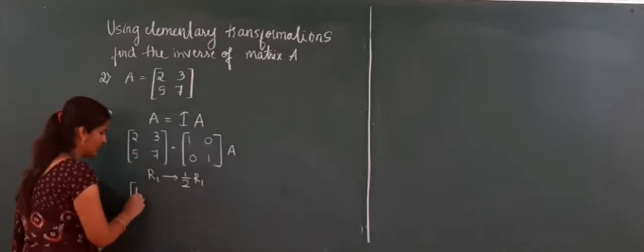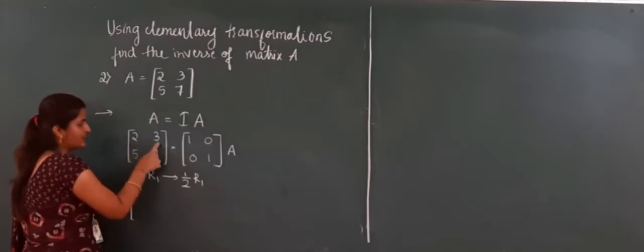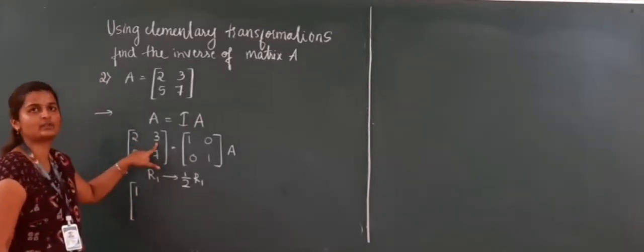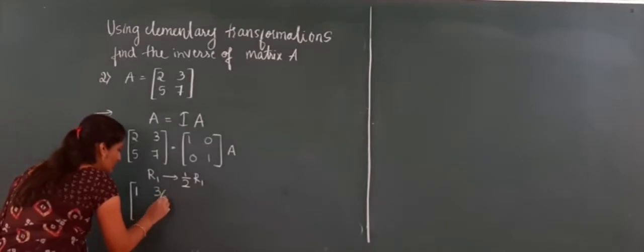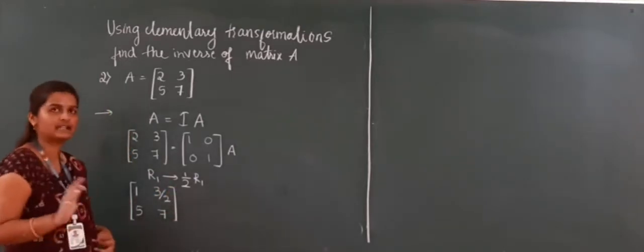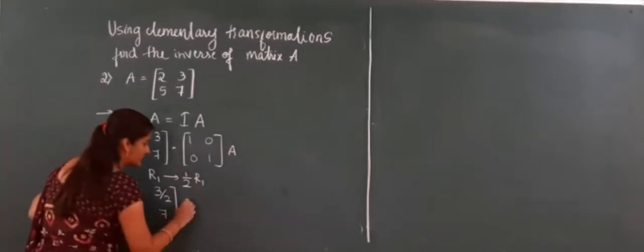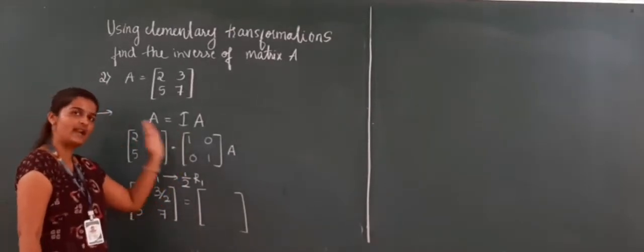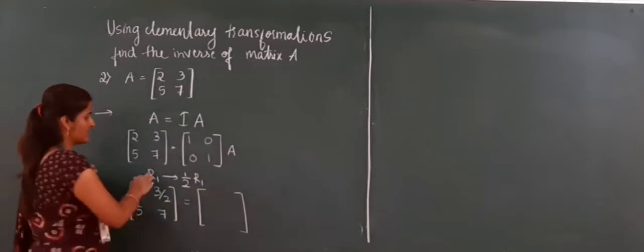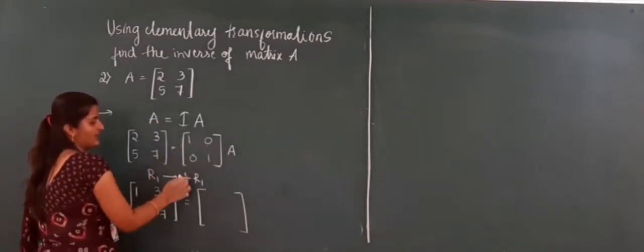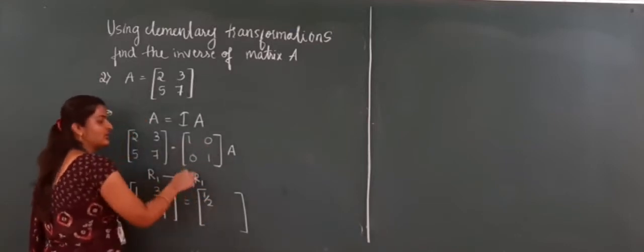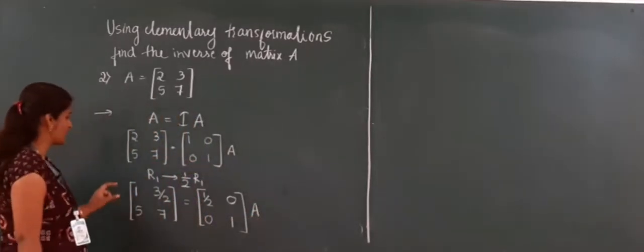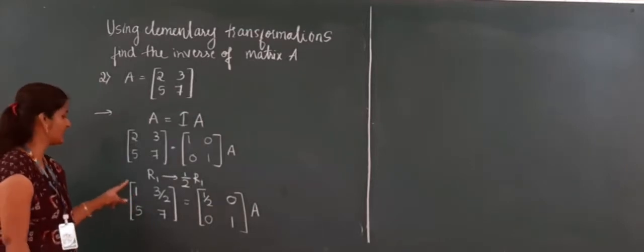R1 means I have to apply the operation to both elements — not only the first element. R1 means both elements together. So I multiply 1/2 here also: 3 × (1/2) = 3/2. The second row does not have any transformation applied, so it remains as it is. If you apply the operation on the left side, you have to apply it on the right side also. So R1 changes to: 1×(1/2) = 1/2, and 0×(1/2) = 0. The second row and A remain as they are. The first step of making the first element 1 is complete.